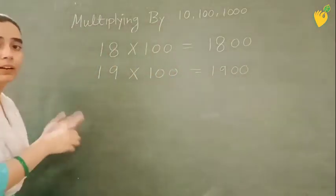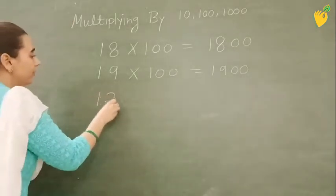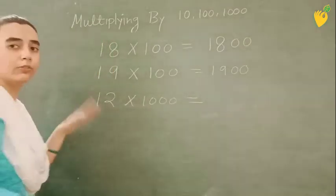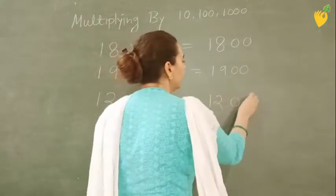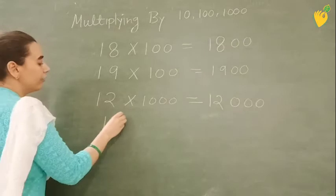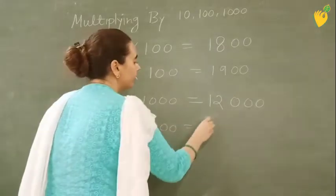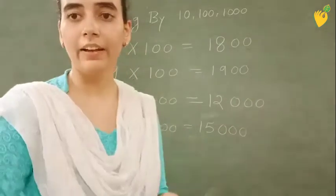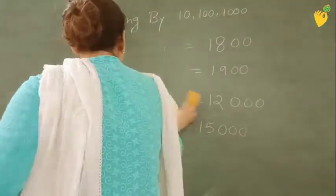Now if we talk about multiplying any number by 1000. So it will be 12 and we will add 3 zeros here. It will be 12,000. Now, 15 multiplied by 1000. It will be 15,000. I hope it is clear to all of you.